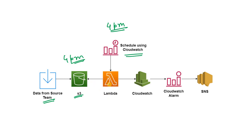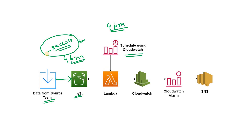Point number two is what file the Lambda will search for. It might happen the source team is writing multiple files in that same S3 location in the current partition. So whether the data is partially or completely written — how will the Lambda understand from a single file search? The answer is the underscore success file. If this file is available in the latest partition, it means the complete data has been written by the source team, because this success file is generated only when the complete data is written by Spark code. So what the Lambda will do at 4 PM is search the latest partition for this underscore success file.